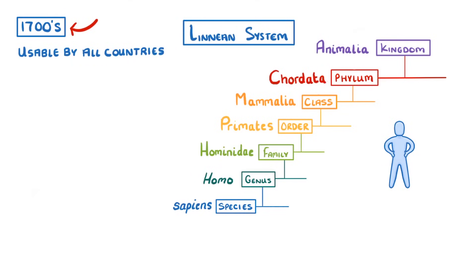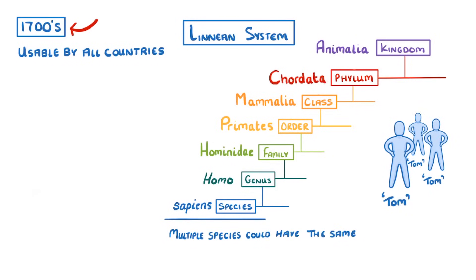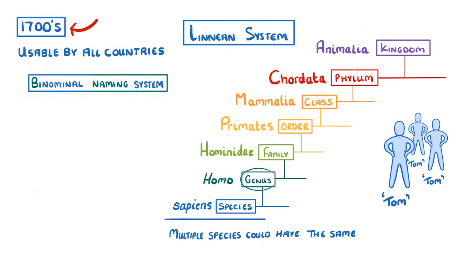This is obviously too much to say every time you want to describe a species. But that last category of species often isn't enough, as multiple species could have the same one — just like how lots of people are called Tom. So Linnaeus instead proposed the binomial naming system, where we name species by their genus and species names. For example, humans would be Homo sapiens. Whenever you write a name like this, you should do it all in italic, and only capitalize the first letter of the genus name, as shown here.